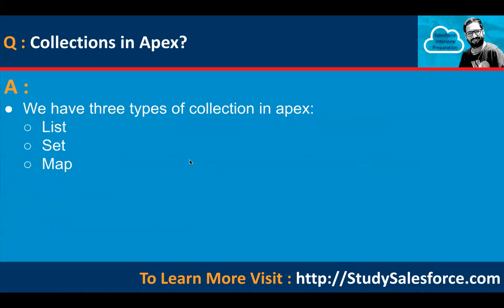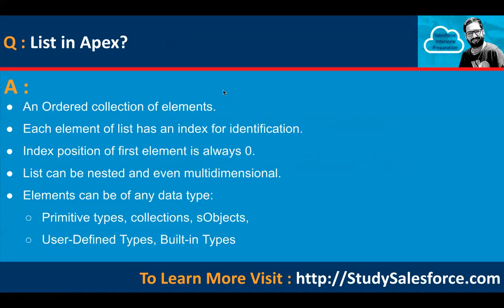As a fresher giving an interview, another question could be: what collections are available in APEX? We have three types of collections: list, set, and map. What is a list? It is an ordered collection of elements. Each element of a list has an index for identification. The index position of the first element is always zero. A list can be nested and even multidimensional, and elements can be of any data type — primitive, collections, SObjects, user-defined types, or built-in types.